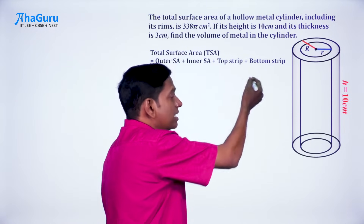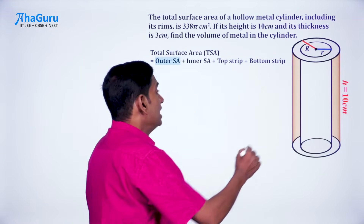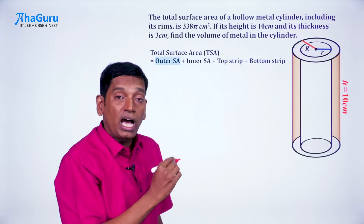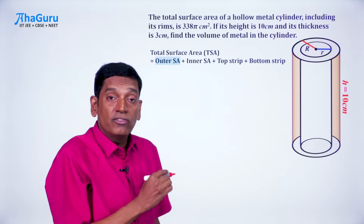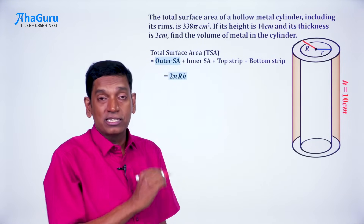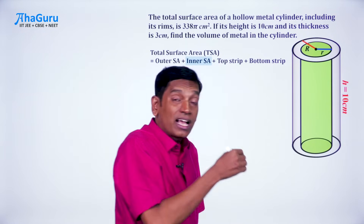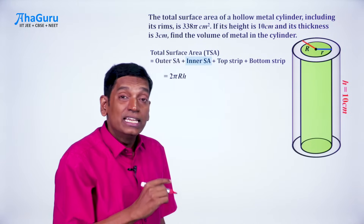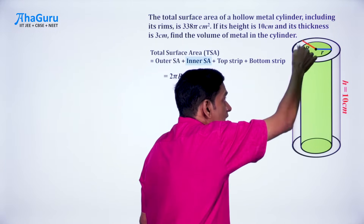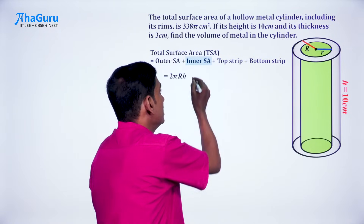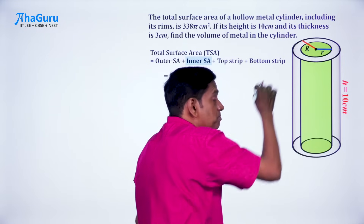It is not very easy to understand why exactly these components, so let us look at this step by step. The first is the outer surface area — that is the curved surface area of the outer cylinder. The outer cylinder has radius capital R and height h, so its curved surface area is 2π·R·h. The inner surface area is again the curved surface area of the inner portion, and that is 2π·r·h. There are two different surface areas because it is a hollow metal cylinder; if it were solid, there would be only one outer surface area.